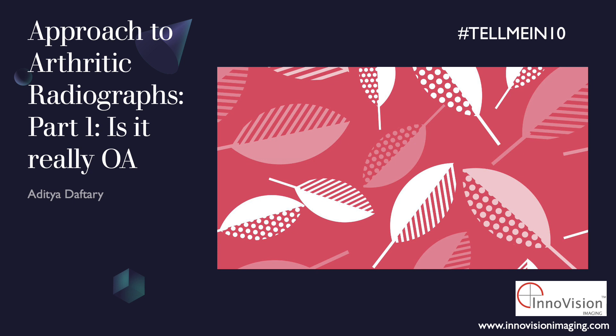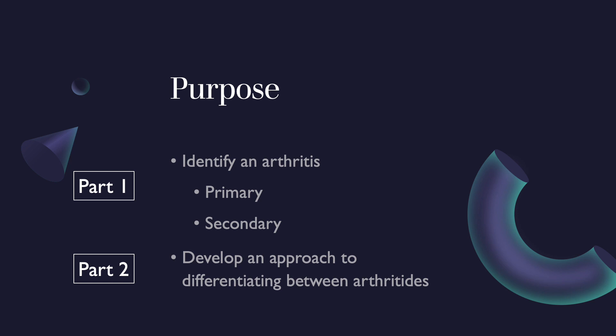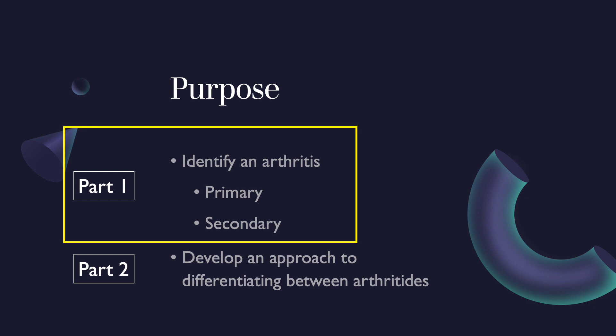Hi everybody, this is the first of our two-part talk on arthritis imaging. This talk is broken up into two parts: the first part is about identifying whether an arthritis is primary or secondary, and the second part is developing an approach to differentiating between the arthritides.